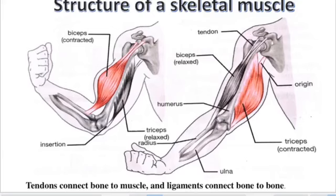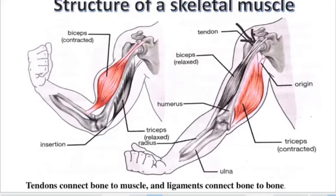We are going to start with the structure of a skeletal muscle. The skeleton consists of joints and muscles that work together to allow the body to move — this is what we call locomotion. The skeletal muscle consists of tendons. When you look at this arm right here, you can see the tendon. These tendons are the ones that connect the muscle to the bone.